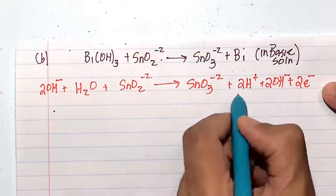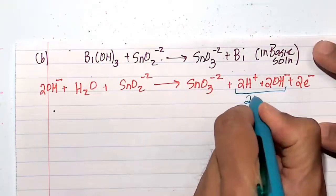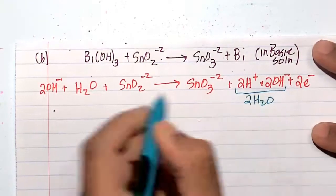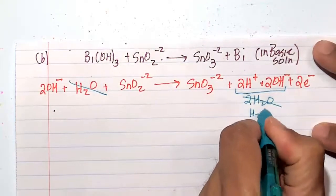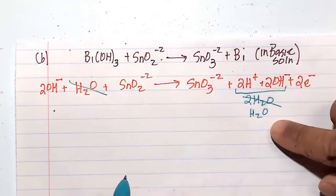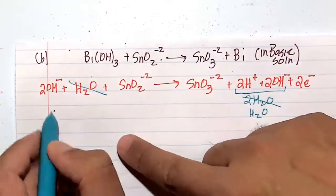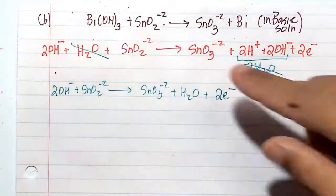I also want to tell you guys that 2H plus plus 2OH minus is 2H2O. One of those H2Os will cancel with one of these two H2Os, leaving me with an individual H2O. And let's go ahead and write this out.